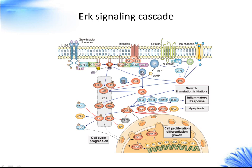MEK1/2 are the only dual-specificity protein kinases that can phosphorylate both regulatory Thr and Tyr residues of ERK1/2. About 200 distinct substrates of ERK1/2 have been identified to date. They are substrates either in the cytosol, for example PLA2 and RSK, or upon translocation in the nucleus, including transcription factors such as ELK1, c-FOS, and c-JUN.